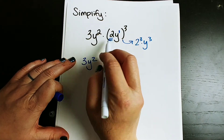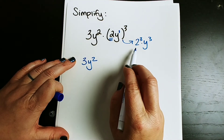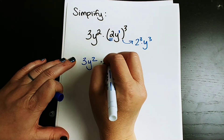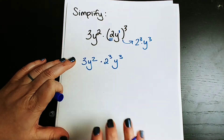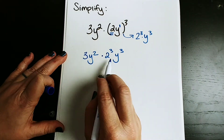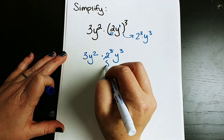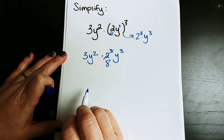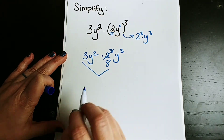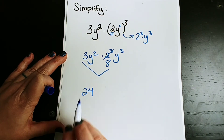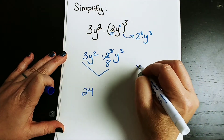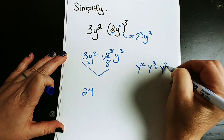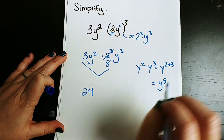Oftentimes this two gets neglected and people will still have a two in their final answer instead of writing two cubed. So we have 2 cubed times y cubed. Two cubed is eight, so let's replace that with an eight. Now we have 3y squared times 8y cubed. Three times eight is 24, and using our multiplication property, y squared times y to the third is y to the two plus three, which is y to the fifth.